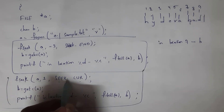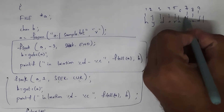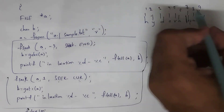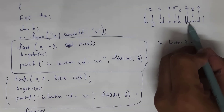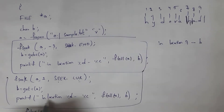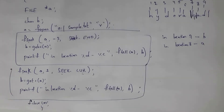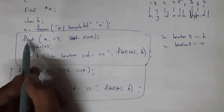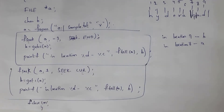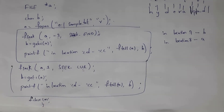Next, SEEK_CUR: if I write fseek(a, 1, SEEK_CUR), from the current position it moves one step forward. Since the previous fseek used -3 with SEEK_END placing the cursor at position B (location 7), moving one forward gives output as: in location 8, A. Remember to include a semicolon for the fseek function. Finally, close the file using fclose. This concludes the example of fseek and ftell functions.